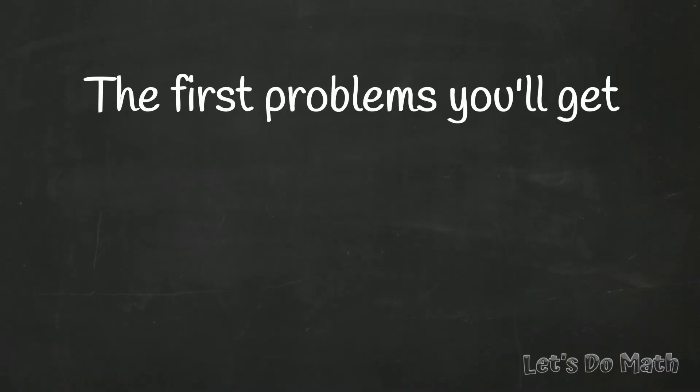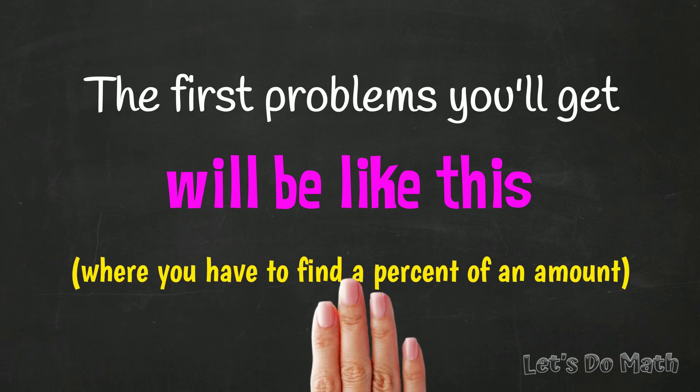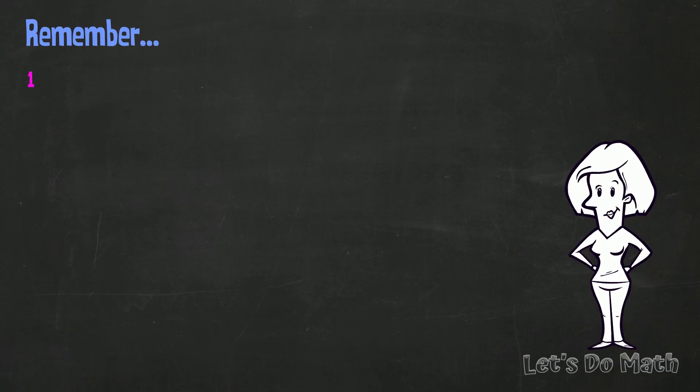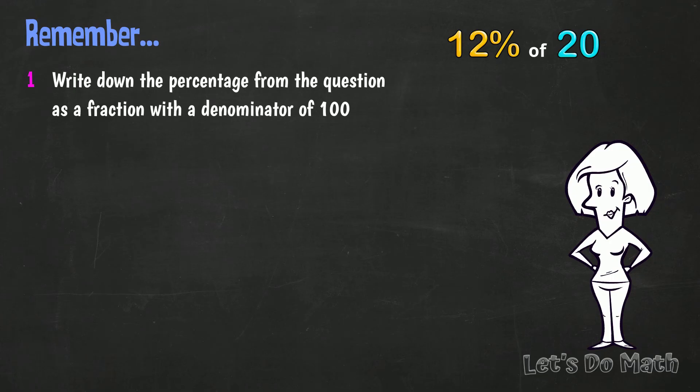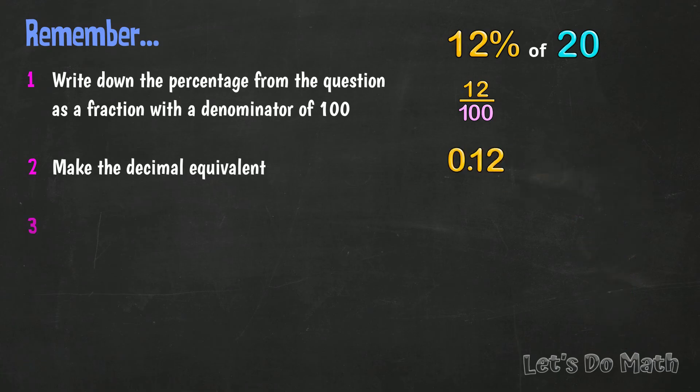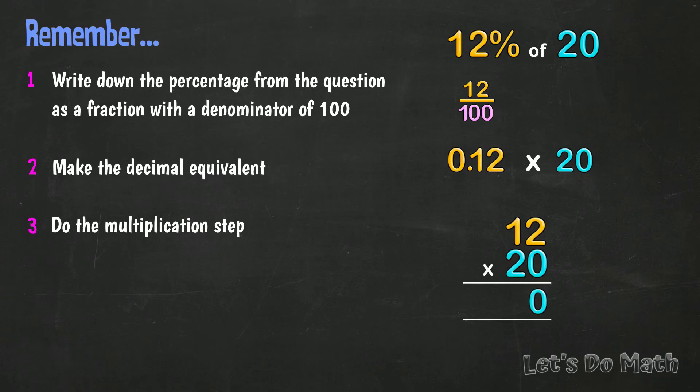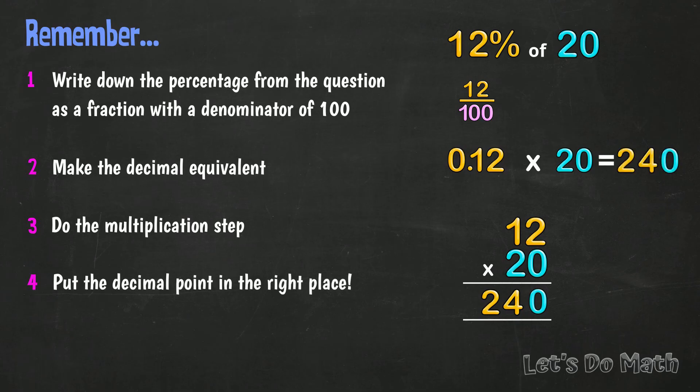The first problems you'll get will be like this, where you have to find a percent of an amount. So remember: First, write down the percentage from the question as a fraction with a denominator of 100. Next, make the decimal equivalent. Then do the multiplication step. Here, start with 0 because this is 2 tens, then 2 x 12 is 24. Finally, put the decimal point back in the right place - 2 decimal figures in the problem, 2 decimal figures in the answer. You got this!